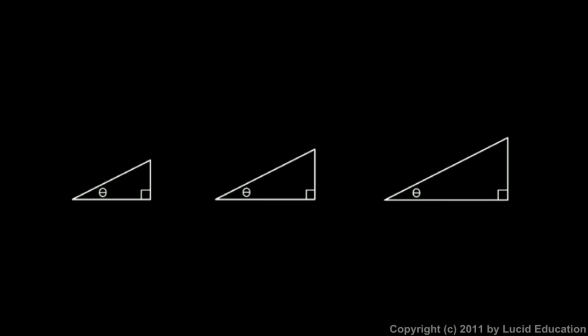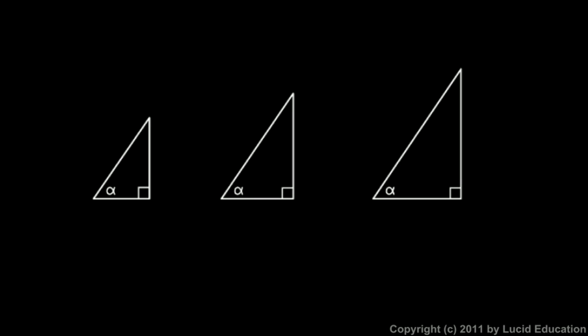So again we see the idea of a constant ratio for each angle. It is the angle that matters. If the angle changes, you can see the ratio changes - now this side compared to this one is different than it was before. But it's the same in all three of these triangles, as long as all three of those triangles have the same angle. So it isn't really the specific lengths that matter - it's the ratio of the lengths, and that ratio is the same for any given angle.